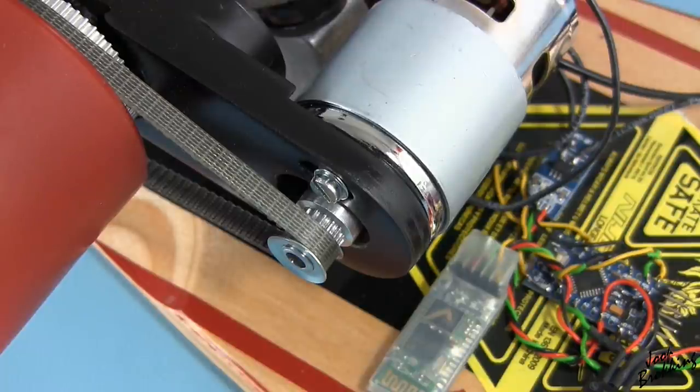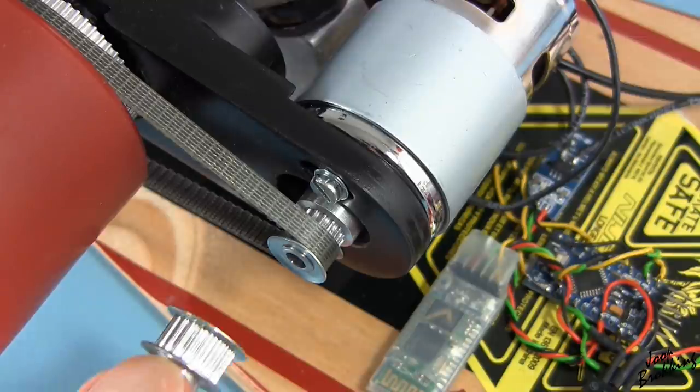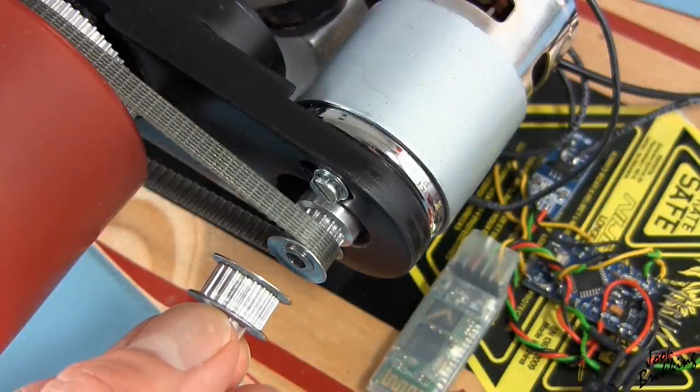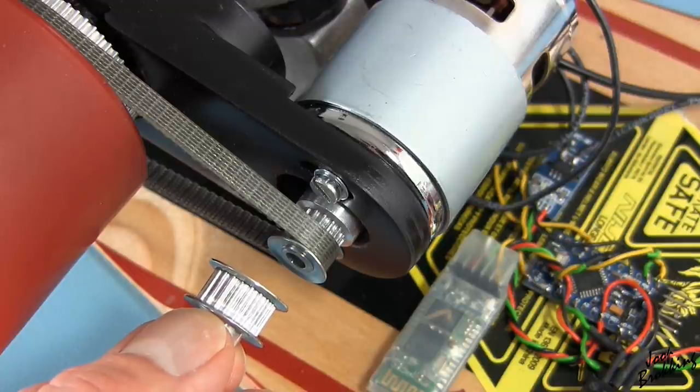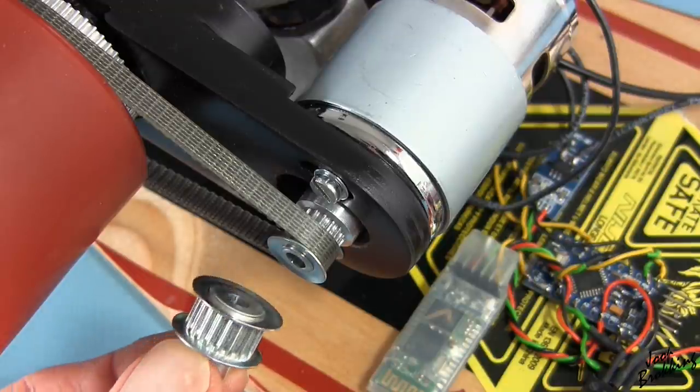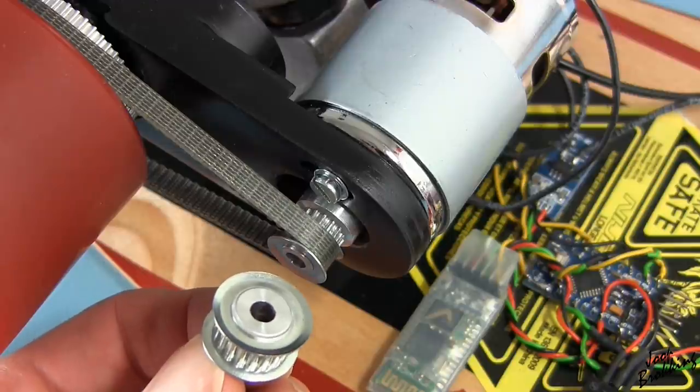One thing that I have changed since the previous video is the toothed motor pulley. This was a 20 teeth pulley and is now a 15 teeth pulley. The motor is running at a higher RPM and the torque is increased.